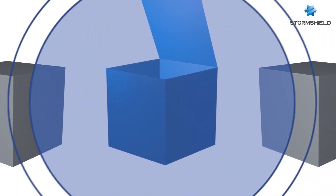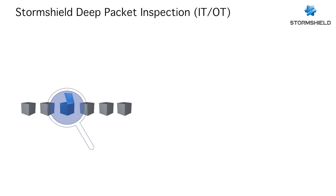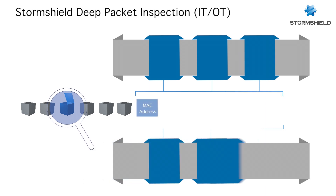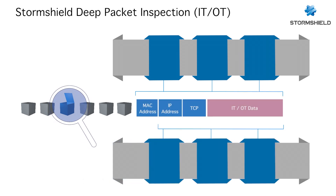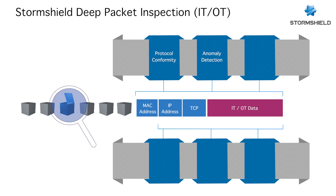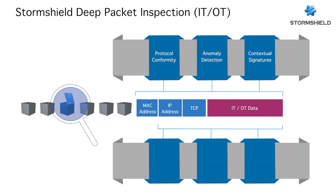StormShield continuously optimizes its software architecture and DPI algorithms to deliver maximum security and best performance. StormShield deep packet inspection performs multi-dimensional analysis on all types of communications. Each packet is analyzed by protocol conformity whitelisting check, anomaly detection based on heuristic and statistical analysis, and matched against intelligent contextual signatures, which perform detailed operation command filtering and control.